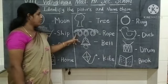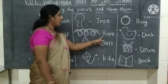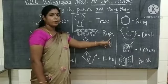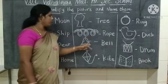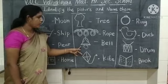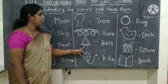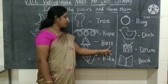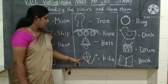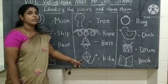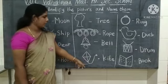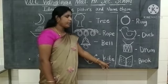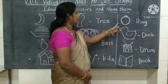What picture is this? This is a rope. R-O-P-E — rope. What picture is this? This is a bell. B-E-L-L — bell. What picture is this? This is a kite. K-I-T-E — kite.